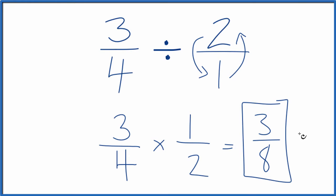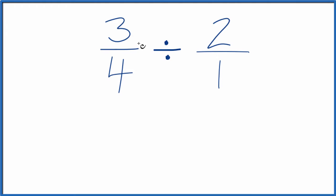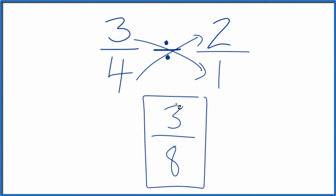There is one other way we can do this. We could multiply 3 times 1, that's 3, and 4 times 2, that's 8. And we're done. We get the same answer, 3 eighths. And essentially, we're just multiplying by the reciprocal with this method just a little quicker.